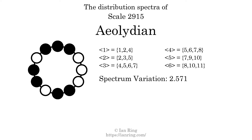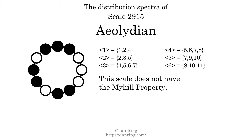The spectrum variation is the sum of all the widths, divided by the number of tones. The spectrum variation of this scale is 2.571. Since the variation is greater than 0, this indicates that the scale is not perfectly even. The highest spectrum width is 3. Since this is greater than 1, we know that this scale is not maximally even. If every spectrum has exactly two specific intervals, we call that the Myhill property. This scale does not have the Myhill property. Since the generic interval ranges overlap, this scale is an improper scale.